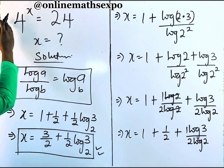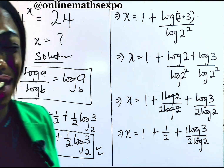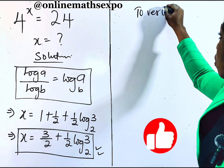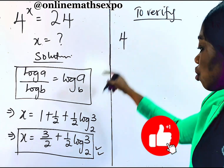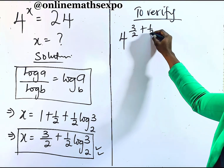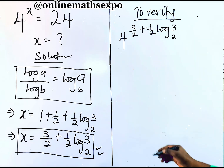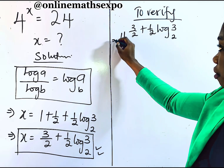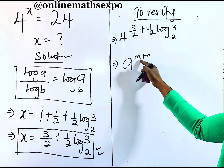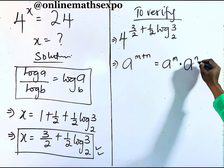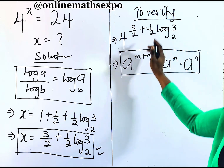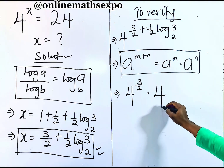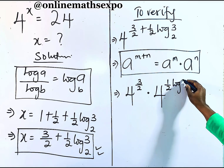Now we're going to plug this value back into the left side to verify it gives us 24. To verify: we have 4 to the power of (3/2 + ½·log₂3). Remember, for every a to the power of m plus n, it is the same as a^m multiplied by a^n. Applying this rule, we have 4 to the power of 3/2, multiplied by 4 to the power of ½·log₂3.